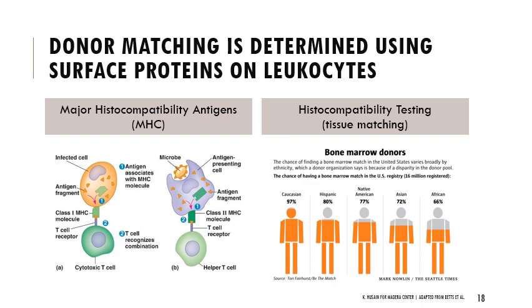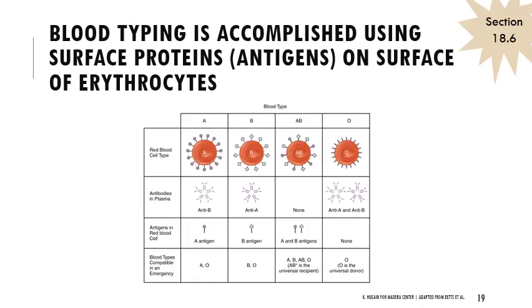Regarding bone marrow match statistics: if you're white, there's a 97% chance of finding a match; Latinx, 80%; Indigenous, 77%; and Asian or African descent has a much lower chance. Continuing with surface proteins on blood cells: when we talk about blood type, we're thinking about antigens on red blood cells. Type A blood has just the A antigen, type B has just the B antigen, type AB has both, and type O has no antigens on the surface.